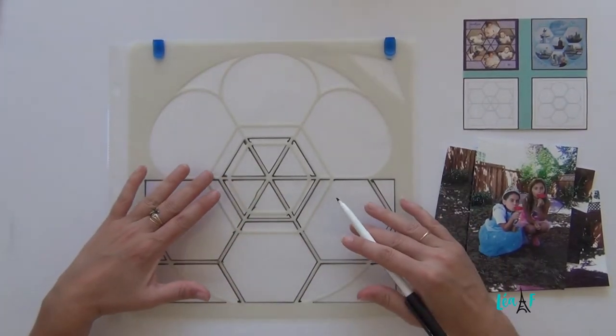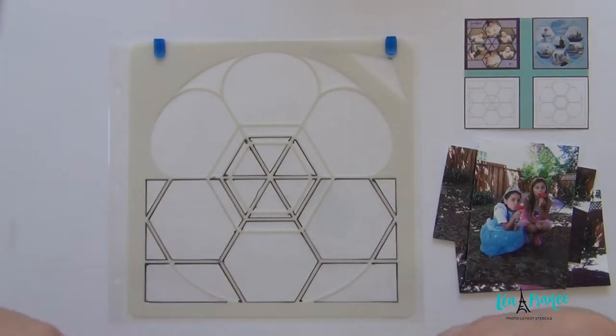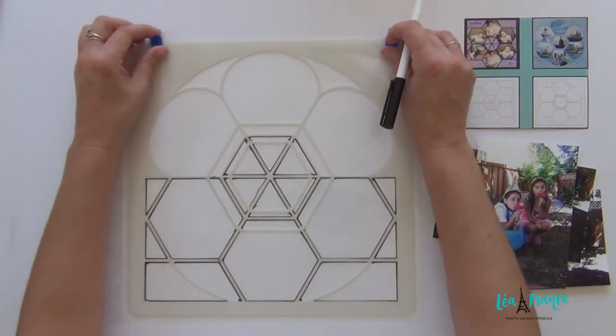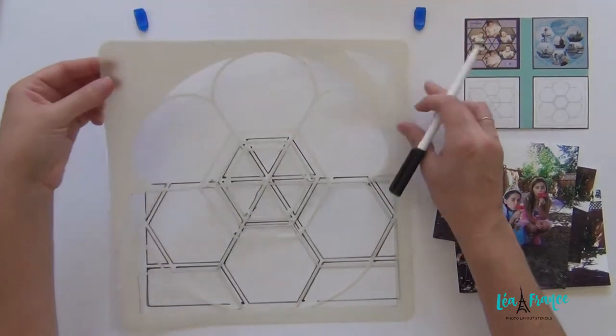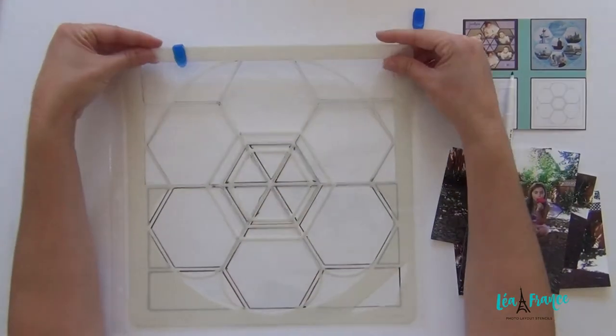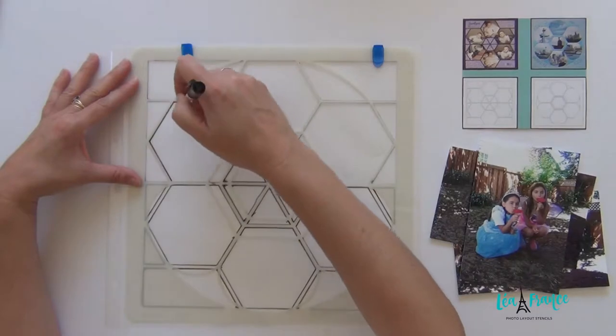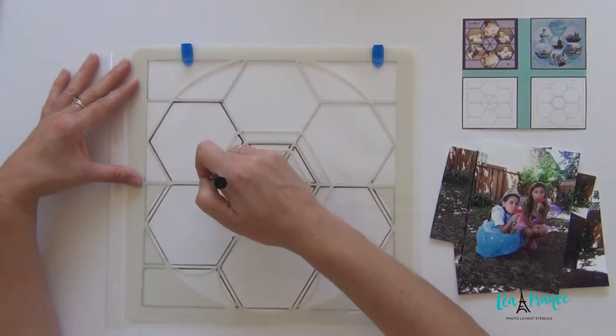So when you're done with this part, what you have to do, you can design your page and then you will use the other part of the stencil. You just basically flip it and now you can trace again the other part.